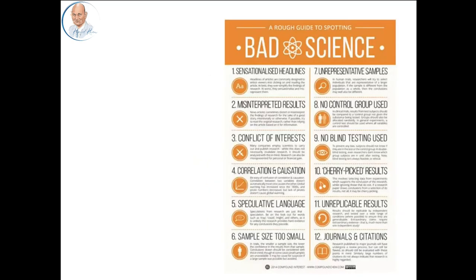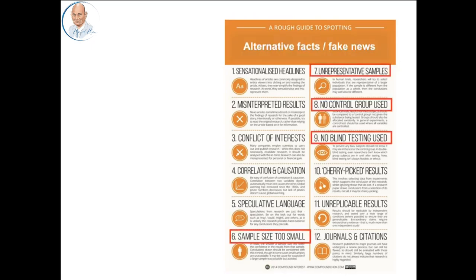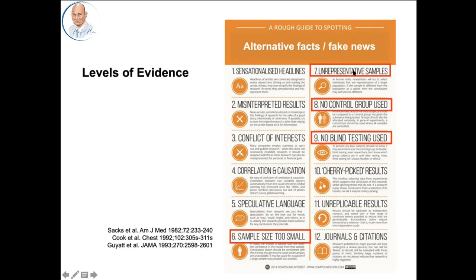With respect to study design, this is like a published infographic. It relates primarily to publication, but I urge you to think about how fake news is produced by scientists. They can do that by using too small a sample size, by not blind testing, by not using a control group, by using unrepresentative samples.